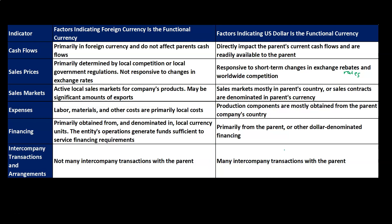For intercompany transactions: factors indicating foreign currency is the functional currency include not many intercompany transactions with the parent, meaning the subsidiary is more independent — less interaction with the parent is another indication the functional currency would more likely be the local currency. Factors indicating U.S. dollar is the functional currency include many intercompany transactions with the parent, suggesting the subsidiary is integrated more with parent operations, and therefore the functional currency would more likely be the parent's currency.